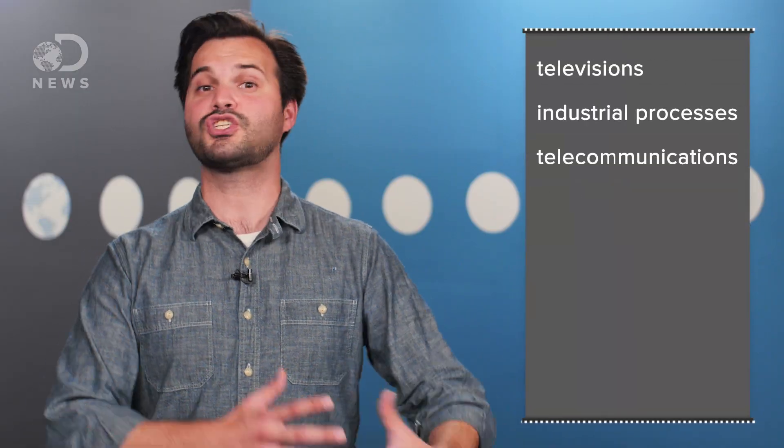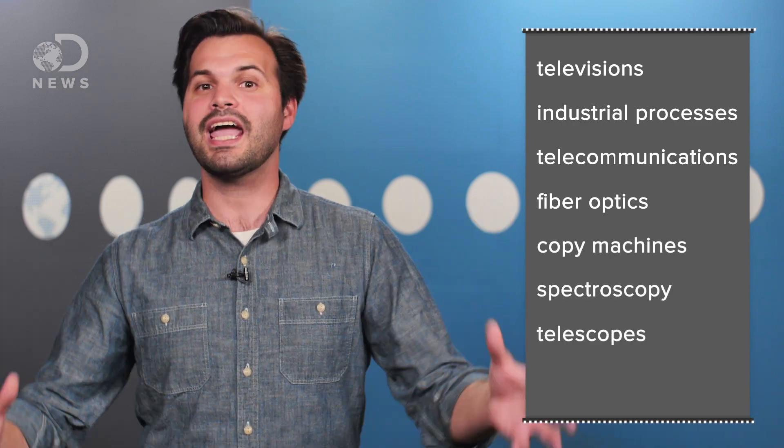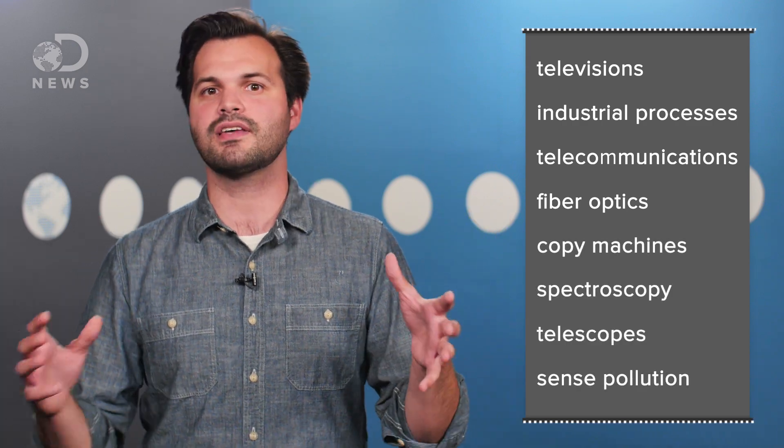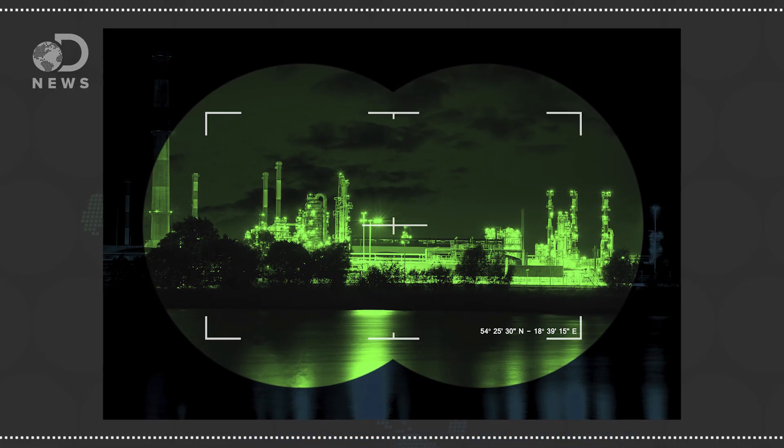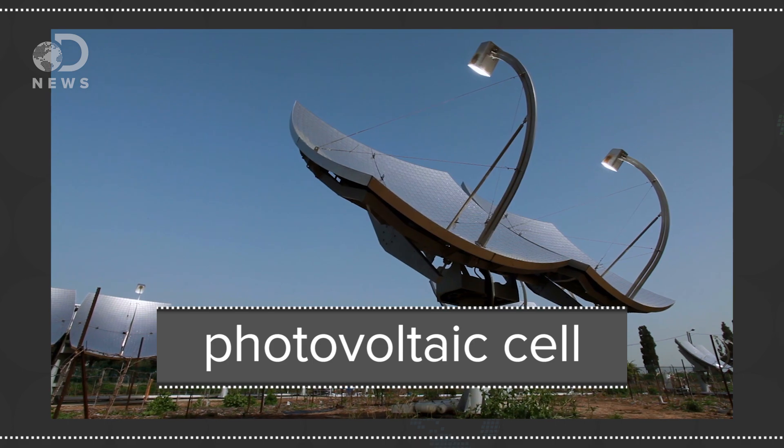Photosensitive cells are used in televisions, industrial processes, telecommunications, fiber optics, copy machines, spectroscopy, telescopes, and to sense pollution or emphasize other lights like in night vision or infrared cameras. Plus, of course, solar panels via a photovoltaic cell.